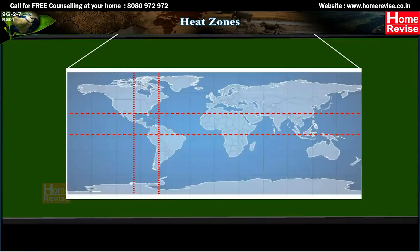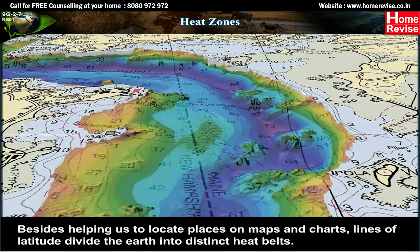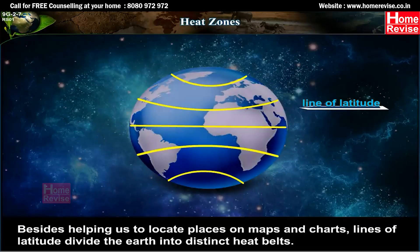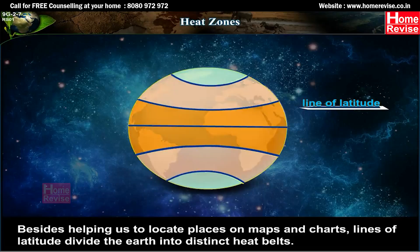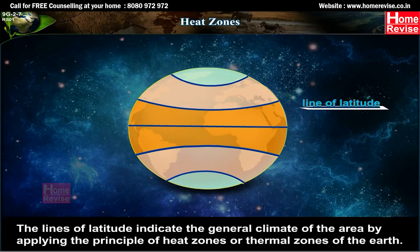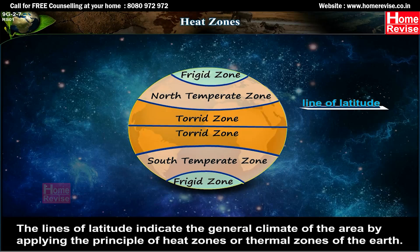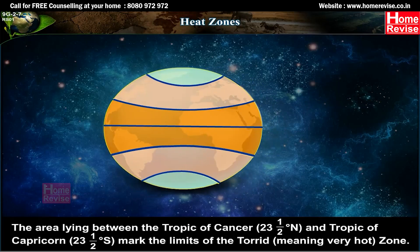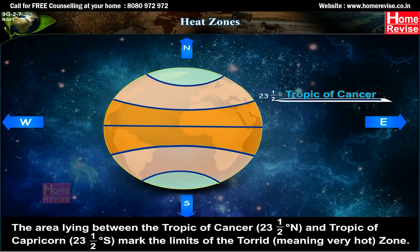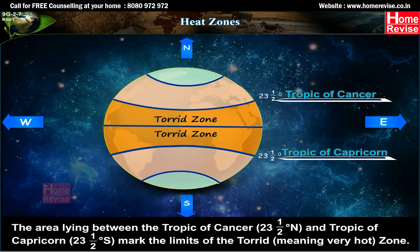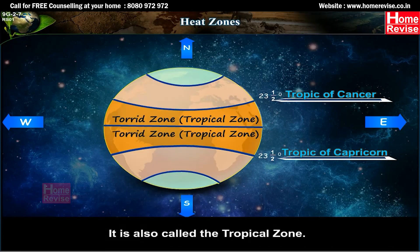Heat Zones: Besides helping us locate places on maps and charts, lines of latitude divide the earth into distinct heat belts. The lines of latitude indicate the general climate of an area by applying the principle of heat zones, or thermal zones, of the earth. The area lying between the Tropic of Cancer (23.5 degrees north) and the Tropic of Capricorn (23.5 degrees south) marks the limits of the Torrid Zone — meaning very hot — also called the Tropical Zone.